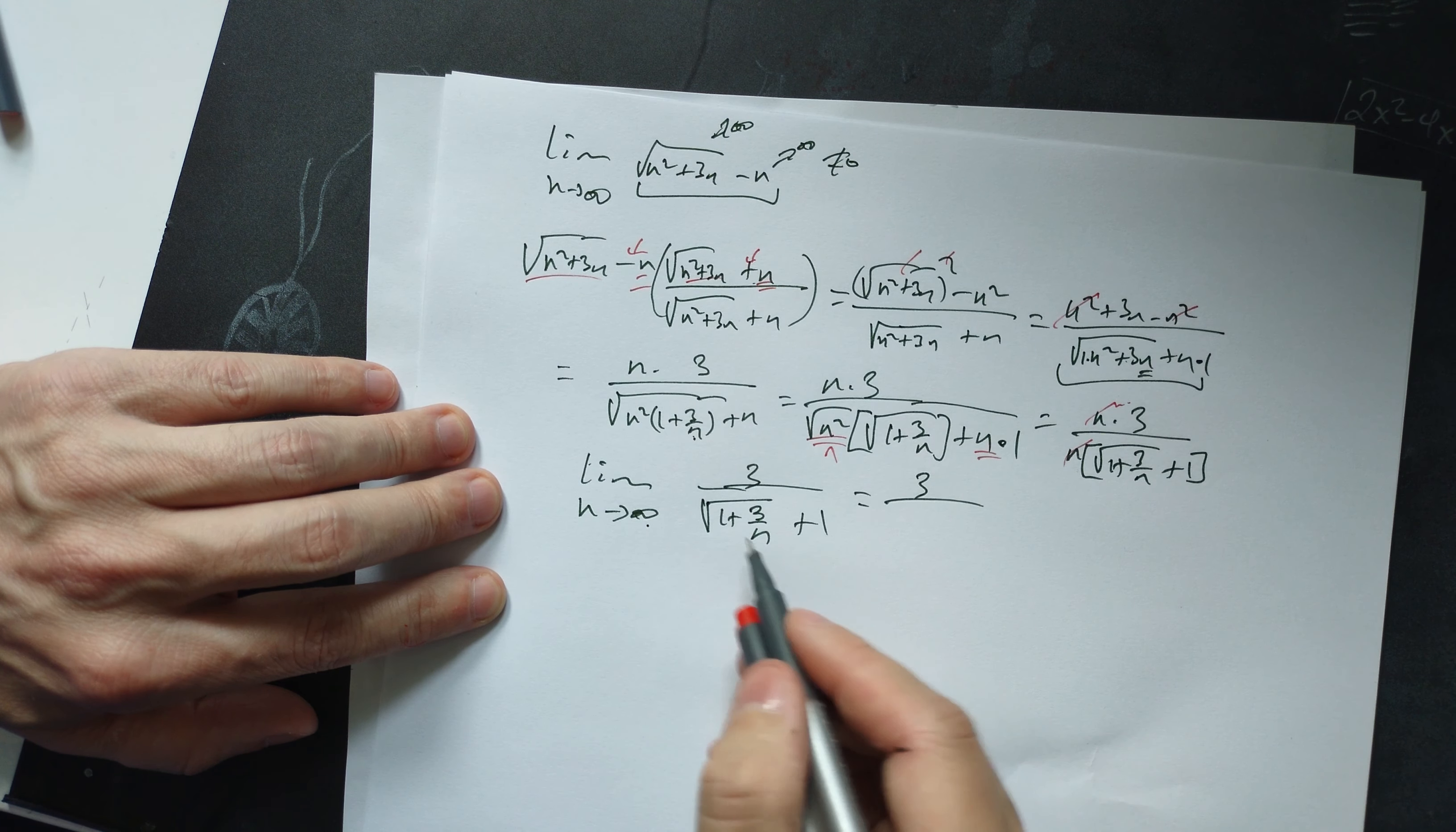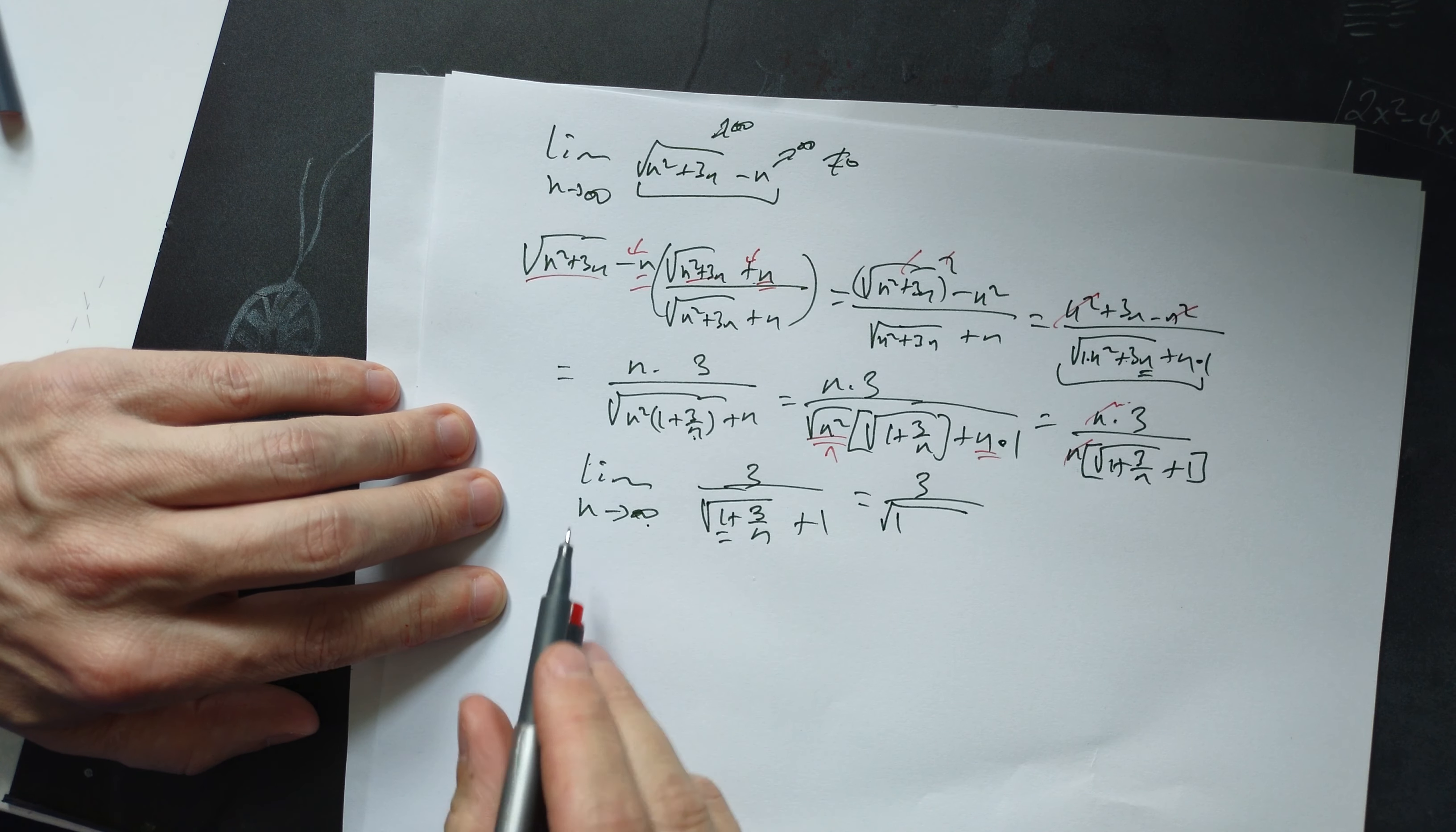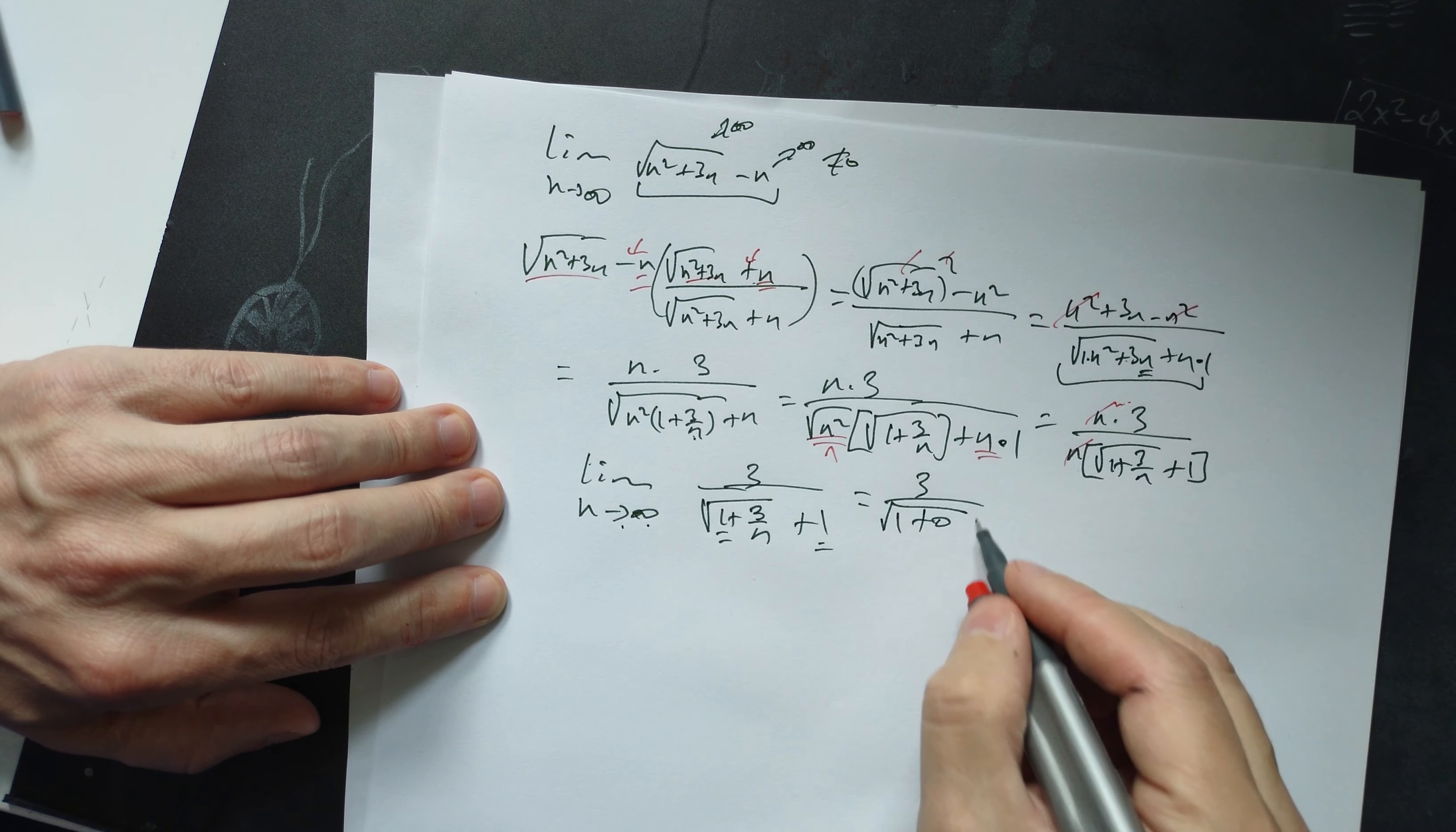The limit of 3 is 3. The limit of 1 is 1 under the root symbol. The limit of 3/n is 0. The limit of this 1 is 1.